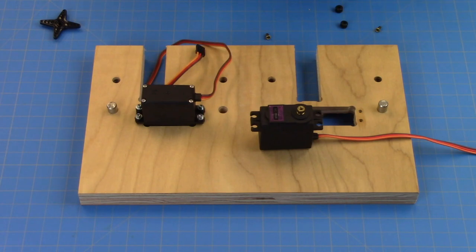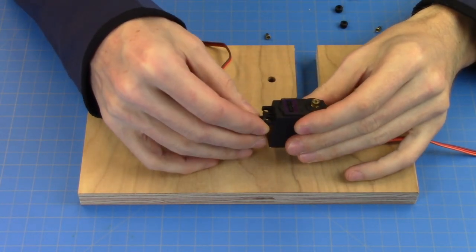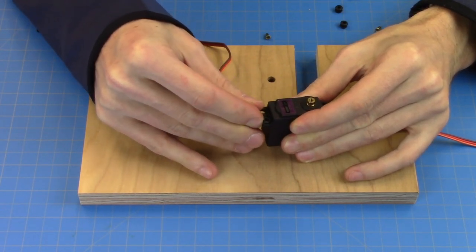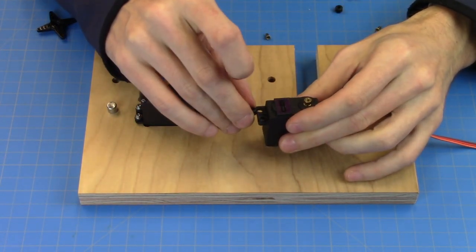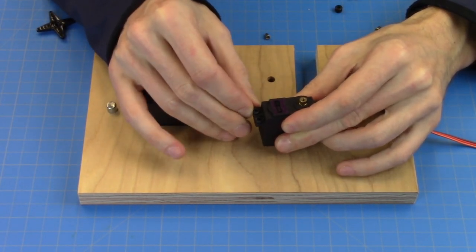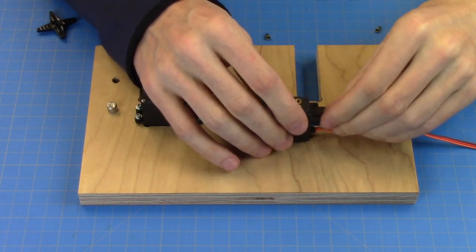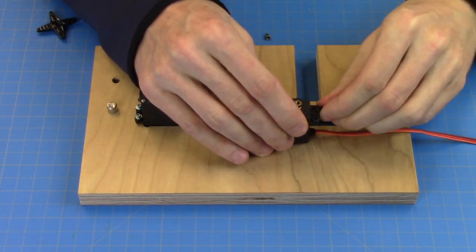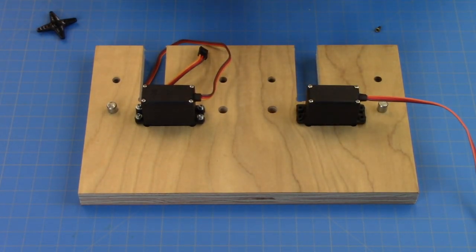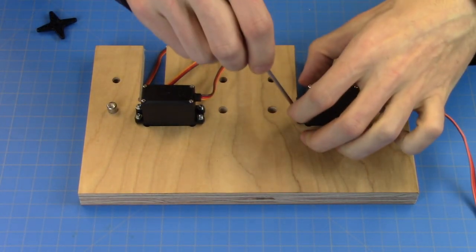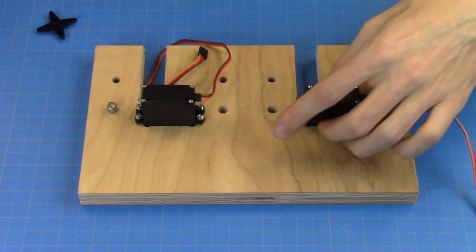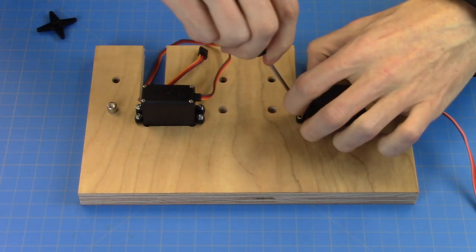For installing the servo we are going to start by adding rubber grommets to reduce the transfer of vibration and noise from the servo motor to the shelf. Then each of the rubber grommets is protected with a brass bushing so that the screws don't damage or squeeze the rubber parts.